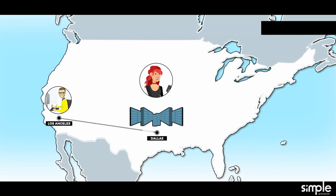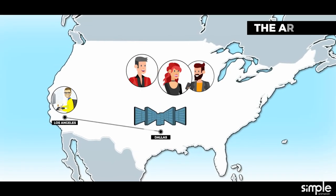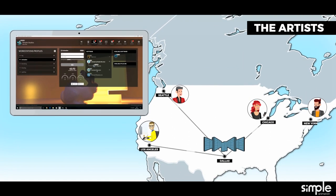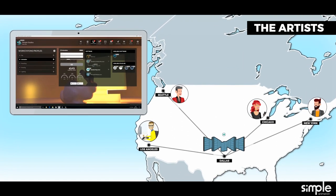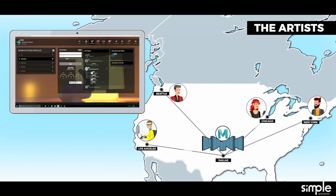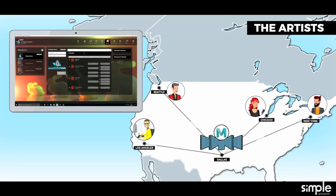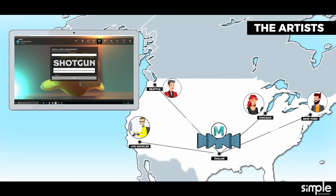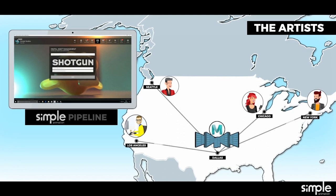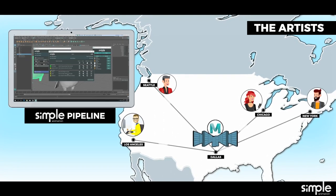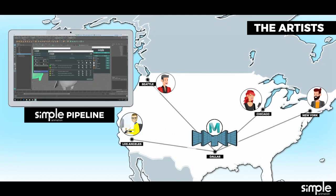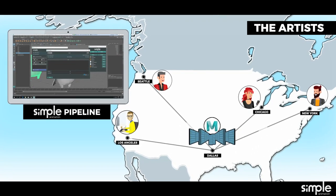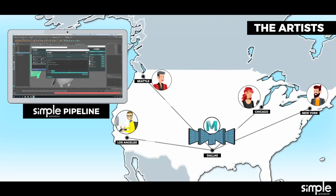As John works in the industry, he has quite a few friends who really liked his project. So he creates a new workstation profile with Autodesk Maya and he invites his friends to his studio, assigning them the necessary access rights in one click. Thanks to Simple's pipeline and Shotgun integration, each member knows at all times what they need to do every day.